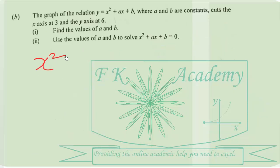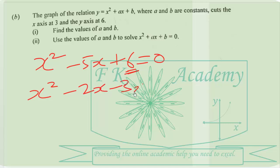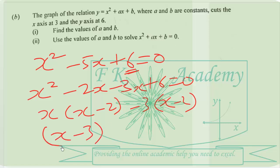Two factors of 6 that when we add give negative 5 are negative 2 and negative 3. Negative 2 and negative 3, when we multiply, give 6. When we add, we get negative 5. So we can factor x out and factor 3 out here to get x minus 3 times x minus 2 equals zero.